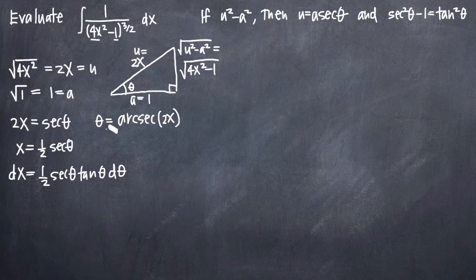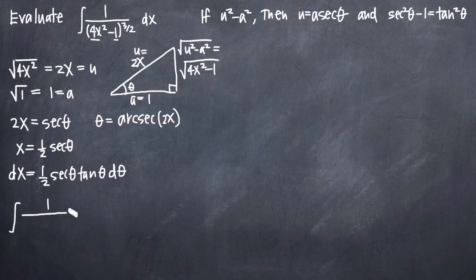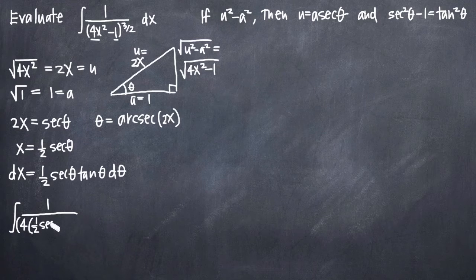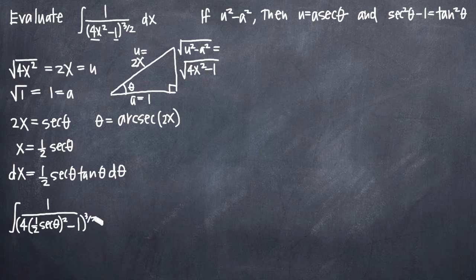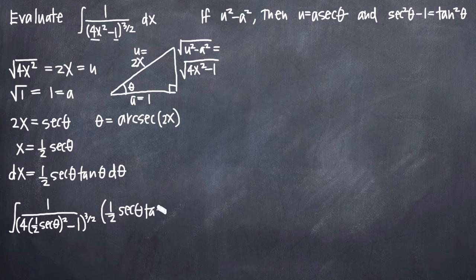That completes our setup. Now we need to make substitutions into our integral. We have the integral of 1 divided by 4 times x squared — we know x equals 1/2 secant theta, so we substitute: 4 times (1/2 secant theta) squared, minus 1, all raised to the 3/2 power. We also substitute for dx: 1/2 secant theta tangent theta dθ.